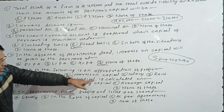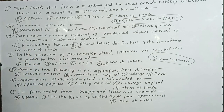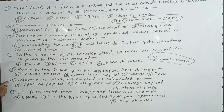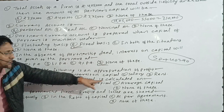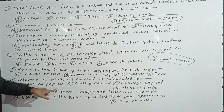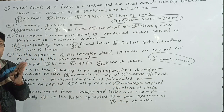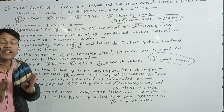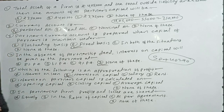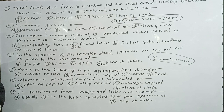Interest on partners' capital is calculated on — this is a very important question and every student tends to make a mistake here. The options are opening capital, closing capital, average capital, or none of these. Interest on partners' capital is always calculated on opening capital.